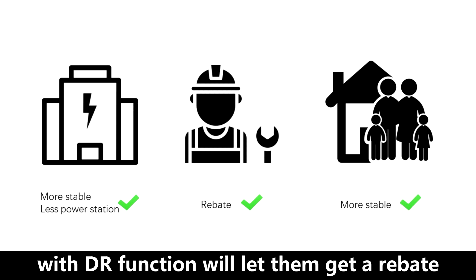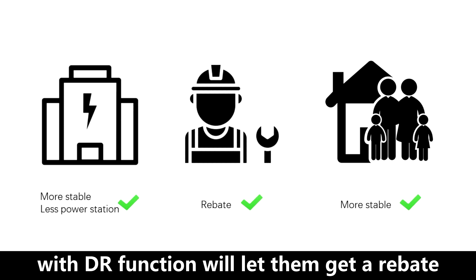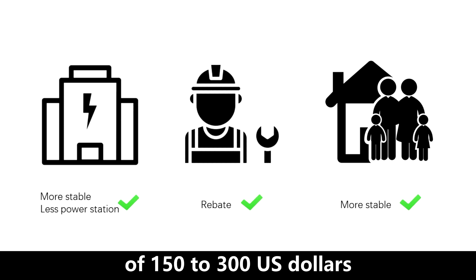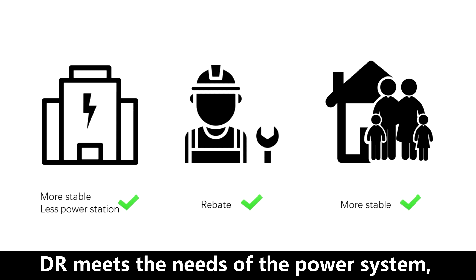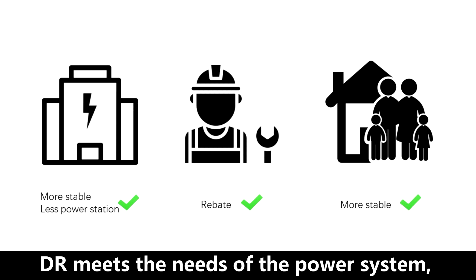For installers, installing an air conditioner with DR function will let them get a rebate of $150 to $300. DR meets the needs of the power system, installers, and the users.